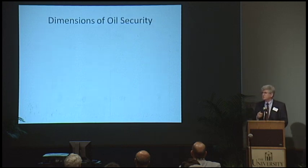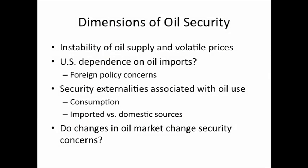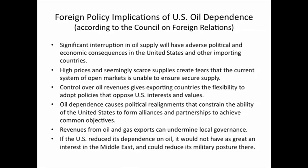So what are the dimensions of oil security? There's the instability of oil supply and volatile prices. There's the question of U.S. dependence on oil imports, foreign policy concerns that arise from that, and security externalities associated with oil use — both consumption and the question of imported versus domestic sources. And do changes in oil market conditions really change the way we look at oil security concerns?